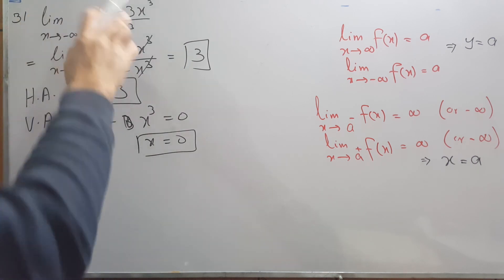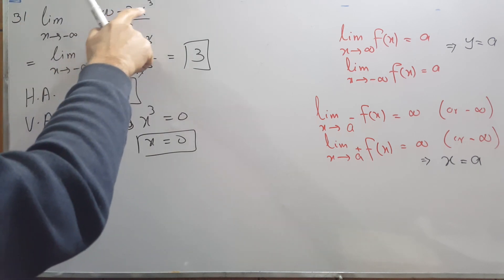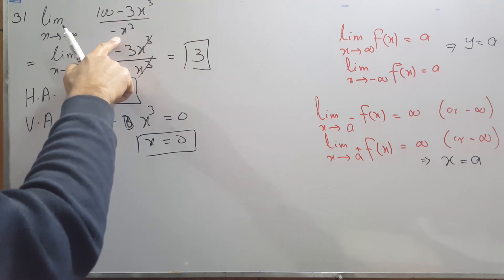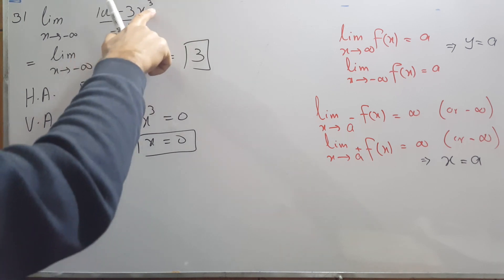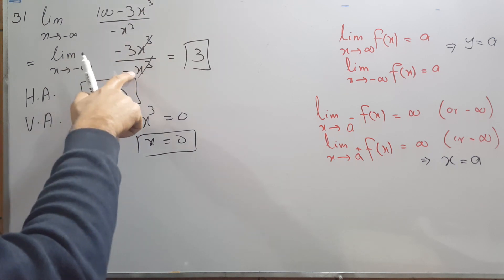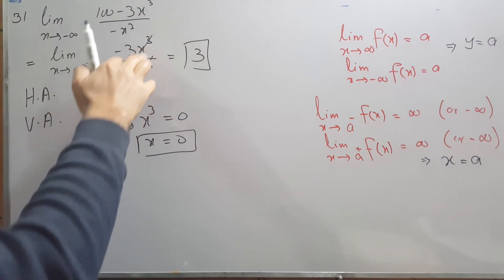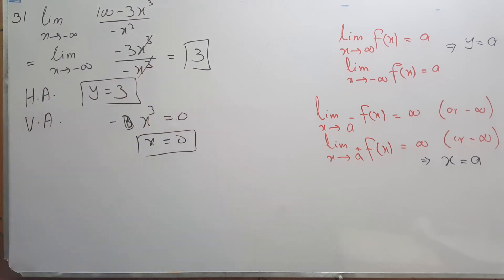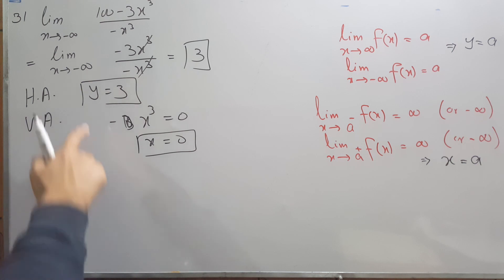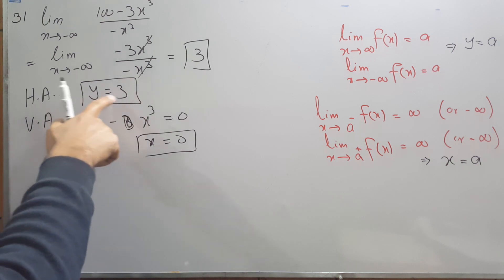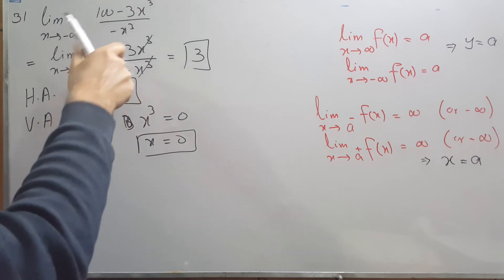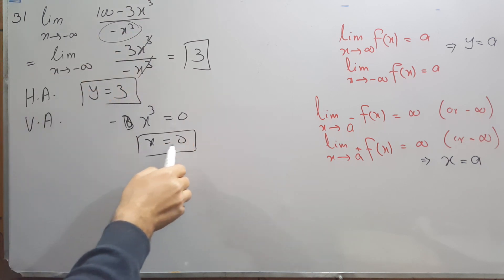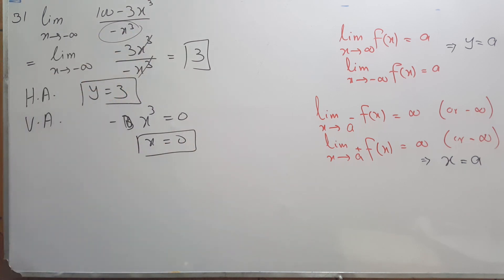In this example, the highest power in the numerator is -3x³ and in the denominator is -x³. We keep those terms; x³ cancels with x³, and -3 divided by -1 equals +3. So the limit is 3, the horizontal asymptote is y = 3, and for the vertical asymptote we set the denominator equal to zero, which gives x = 0 as the vertical asymptote.